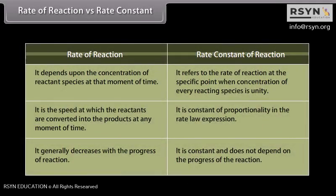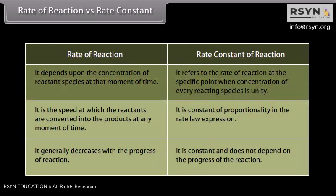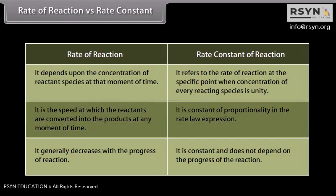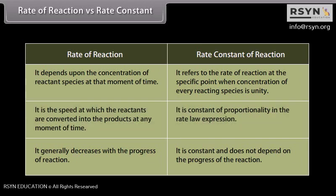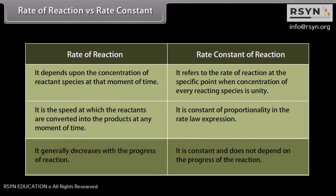The important differences between rate of reaction and rate constant: rate of reaction depends upon the concentration of reactant species at that moment of time, while rate constant refers to the rate when concentration of every reacting species is unity. Rate of reaction is the speed at which reactants are converted into products at any moment, while rate constant is the constant of proportionality in the rate law expression. Rate of reaction generally decreases with the progress of reaction, whereas rate constant does not depend on the progress of the reaction.